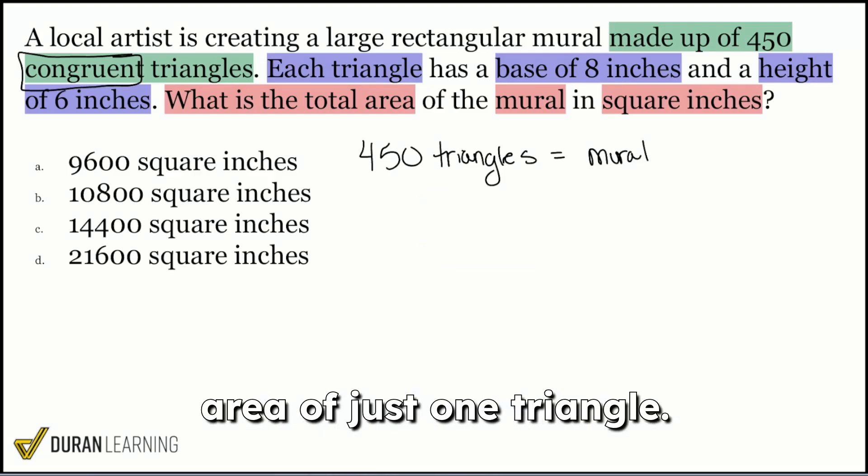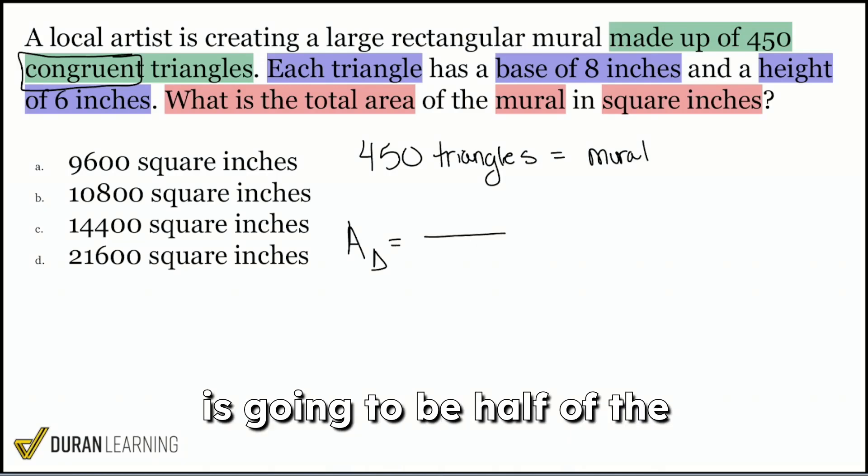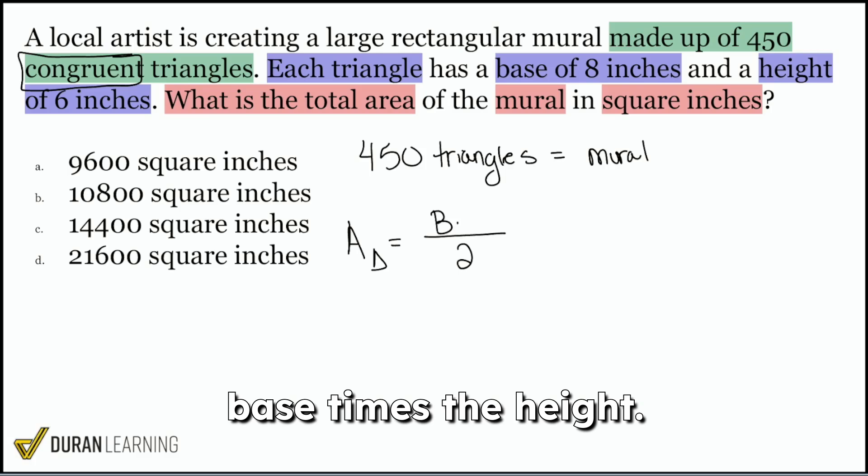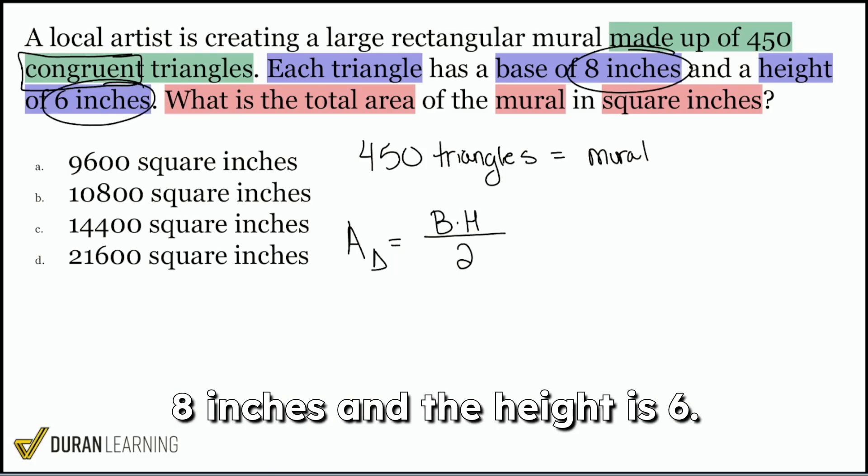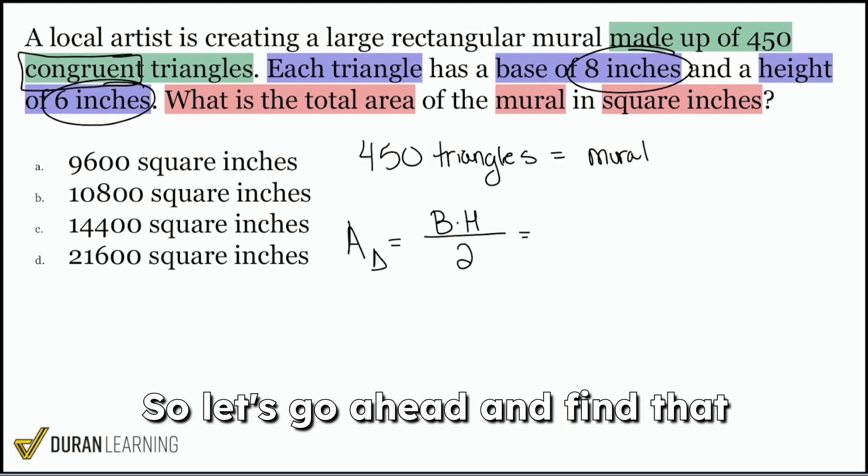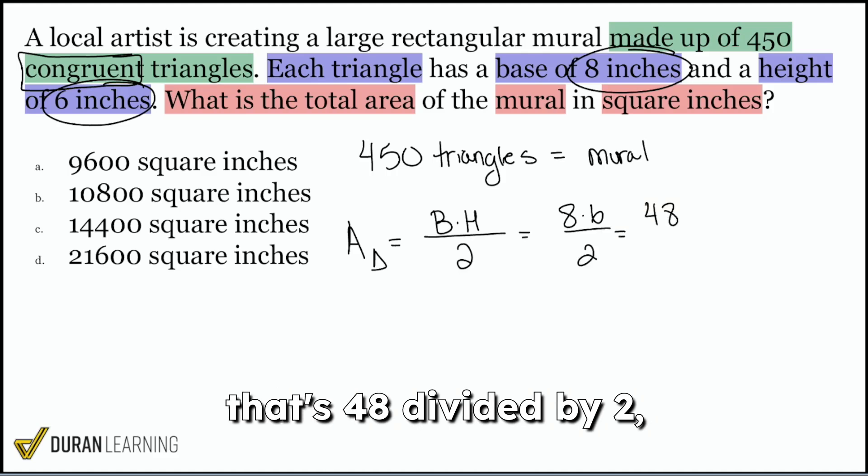So let's go ahead and find the area of just one triangle. The area of one triangle, again, is going to be half of the base times the height. And we are told that the base is 8 inches and the height is 6. So let's go ahead and find that. 8 times 6 divided by 2, that's 48 divided by 2, which is 24.